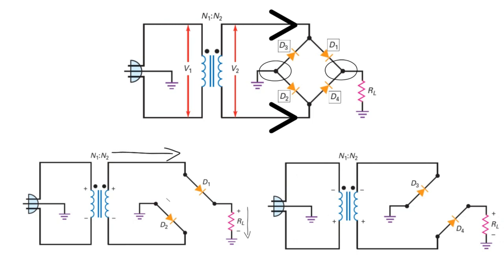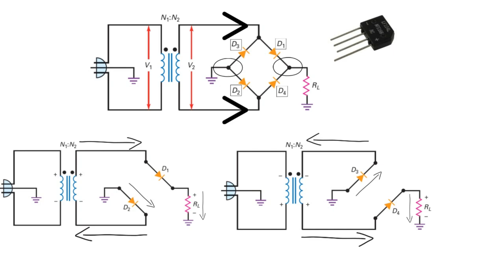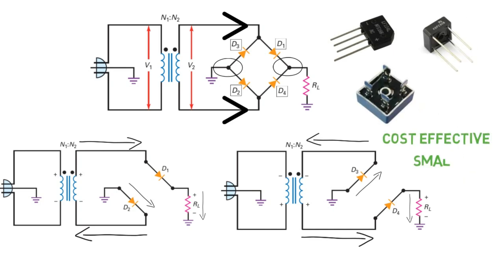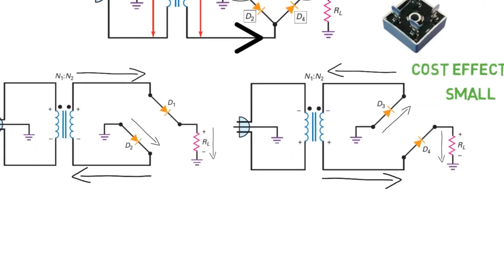In negative half cycle, the current will flow in this direction. This time the diode D3 conducts and the flow of the current is the same for output, and circuit gets completed by diode D4. This is how bridge rectifier works. There are dedicated bridge rectifiers available in the market which are cost effective and smaller in size, which are commonly used instead of using these four individual diodes. The selection process for both components is the same.